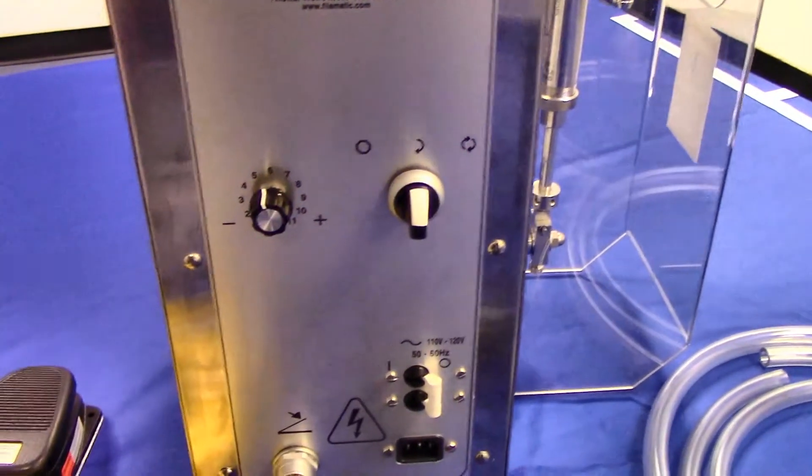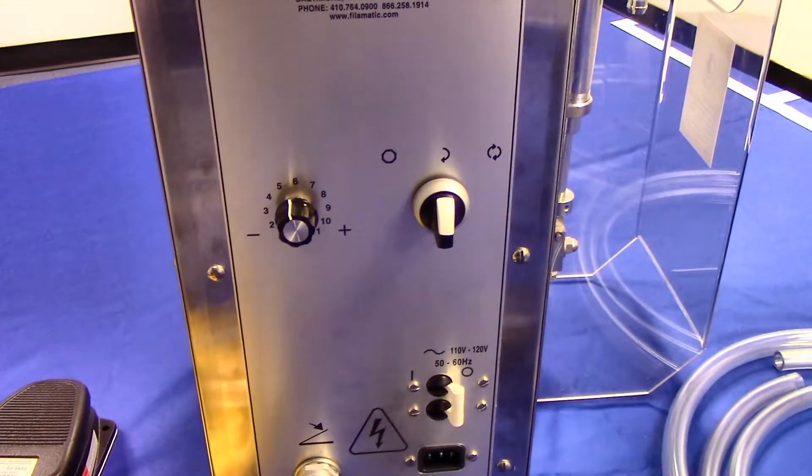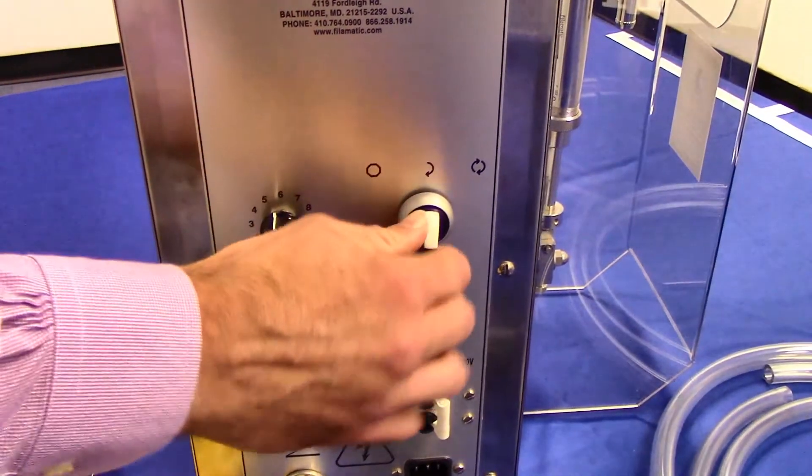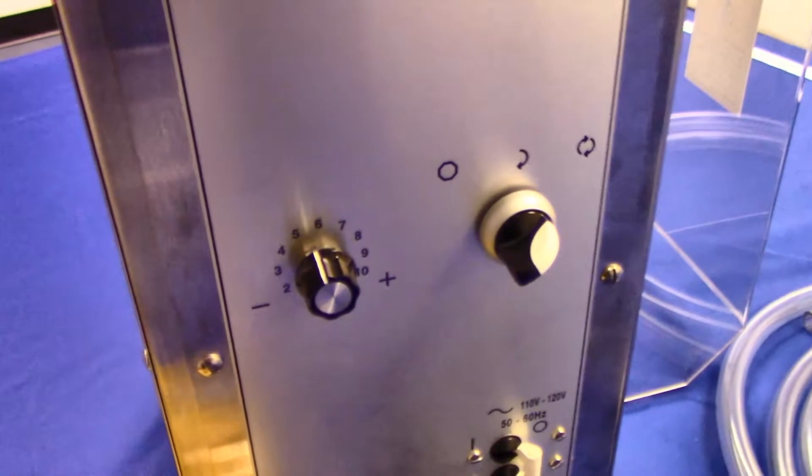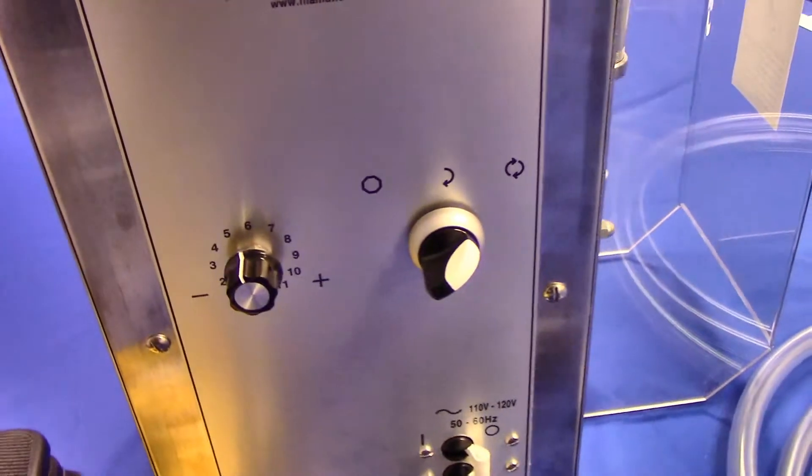To the center is an automatic setting that only dispenses by utilizing the foot pedal. And to the right is the prime setting, which dispenses in a continuous, repetitive motion.